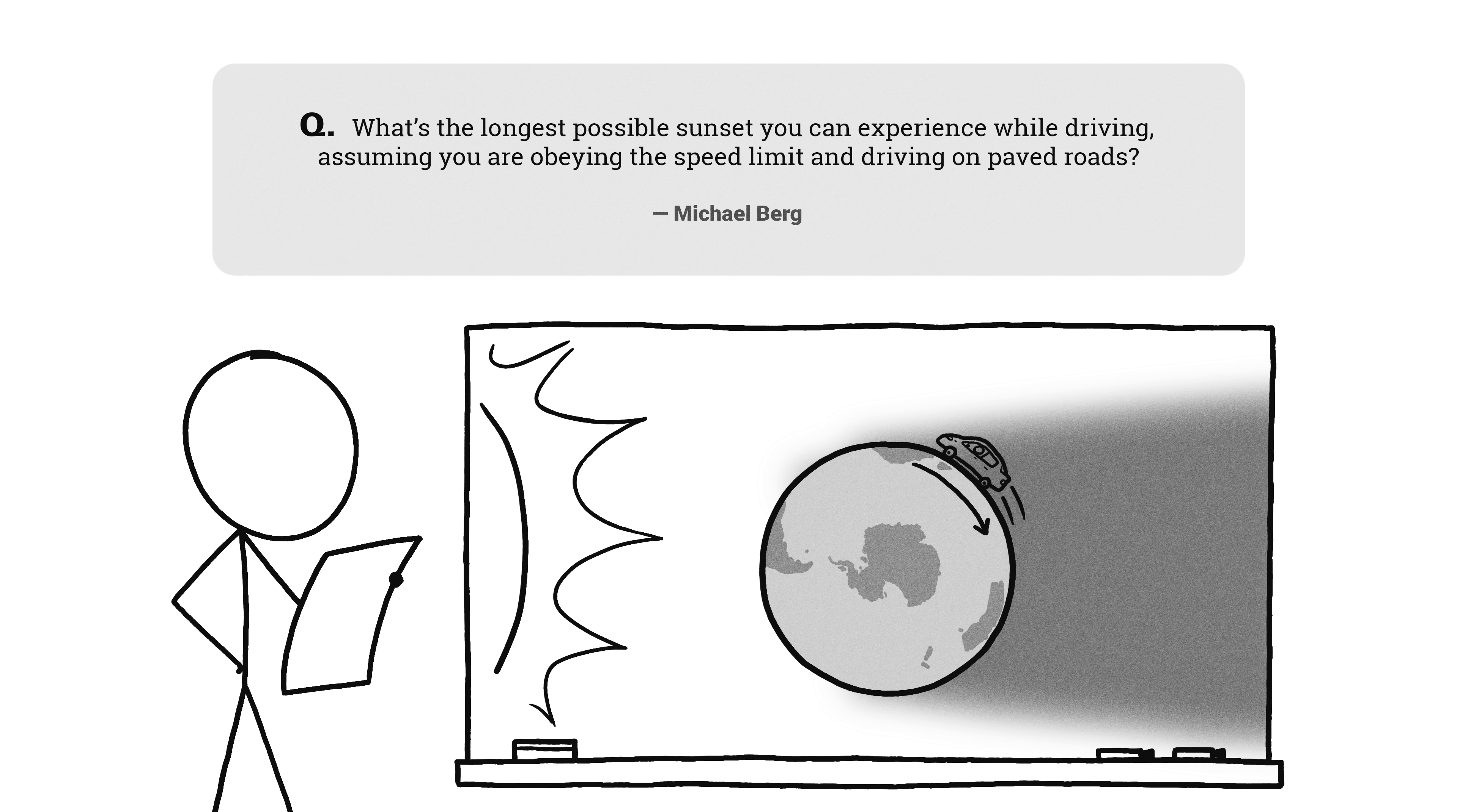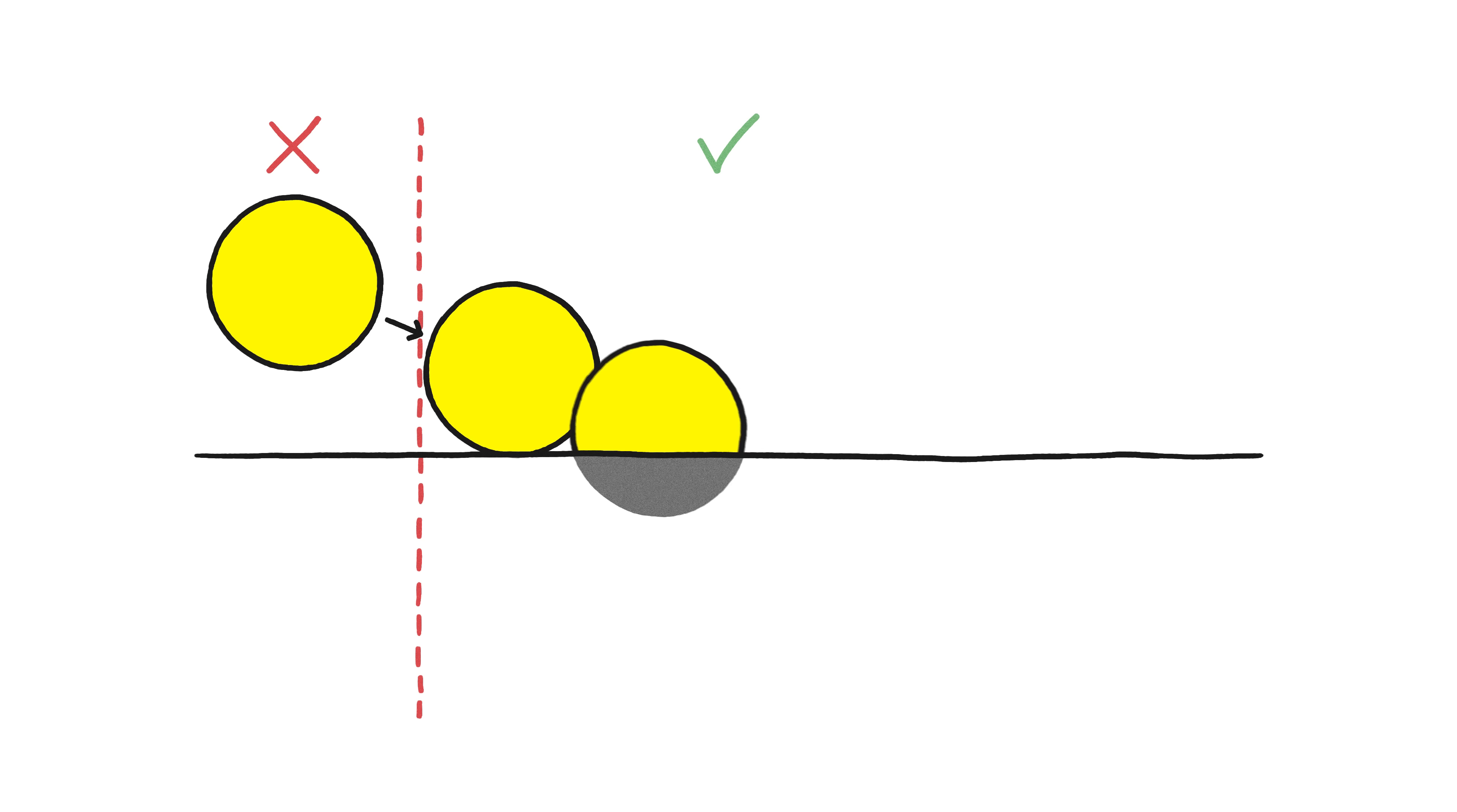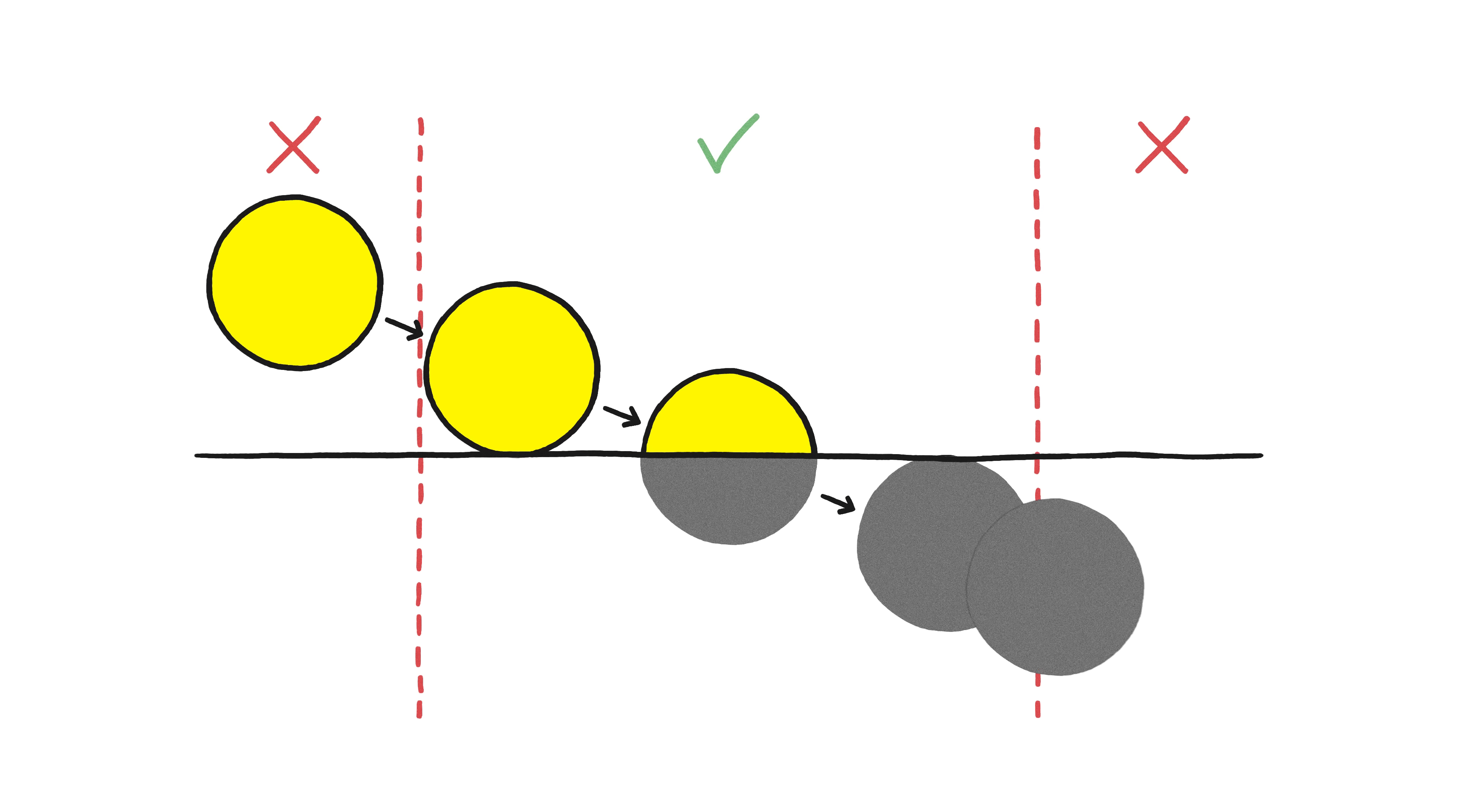This question comes from Michael, who asks: What's the longest possible sunset you can experience while driving, assuming you're obeying the speed limit and driving on paved roads? To start, we have to define what we mean by sunset. For the purpose of our question, sunset starts the instant the sun touches the horizon and ends when it disappears completely.